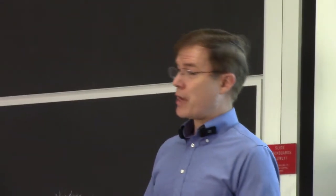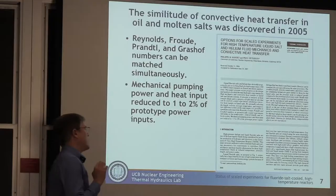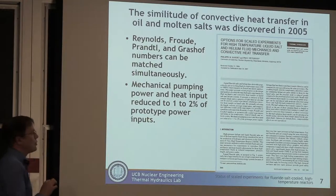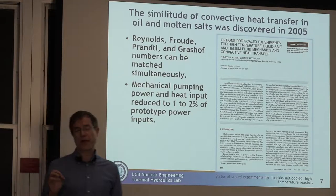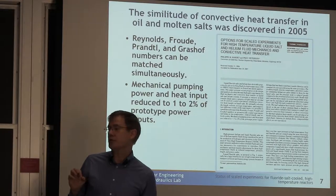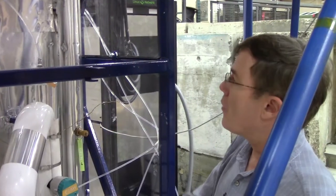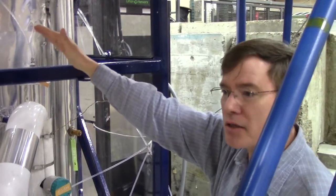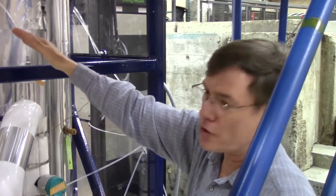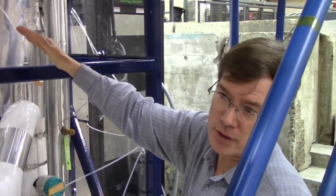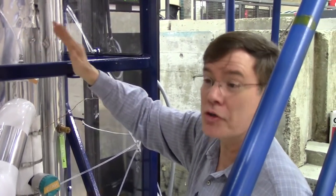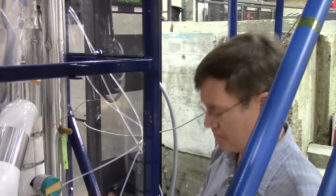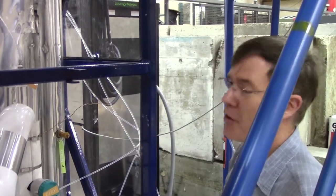For molten salt reactors, there's an amazing thing: we can match the behavior of molten salts in terms of convective heat transfer using heat transfer oils. We can put up to 10 kilowatts of heat into this loop, which in salt would be equivalent to half a megawatt of heat, because of that scaling relationship between the oil and the salt. It's very convenient.